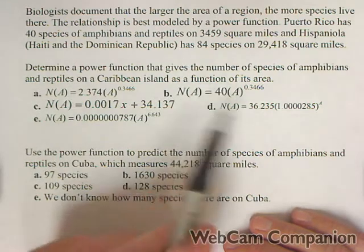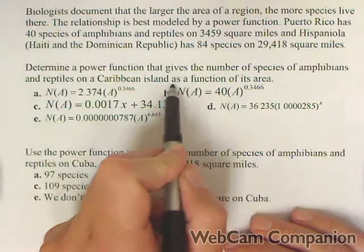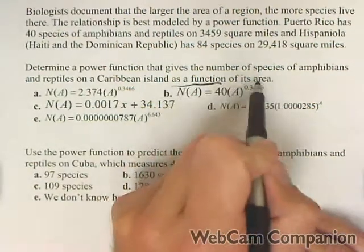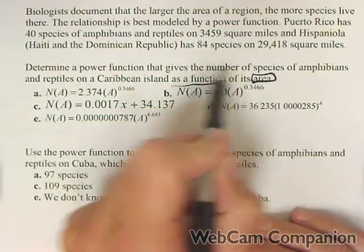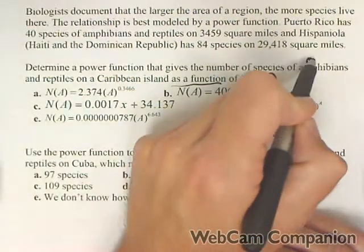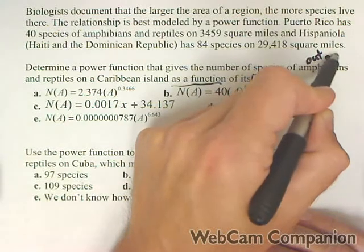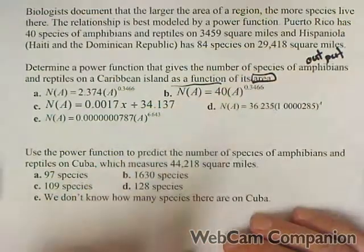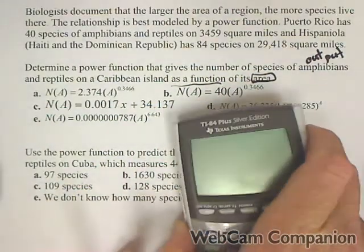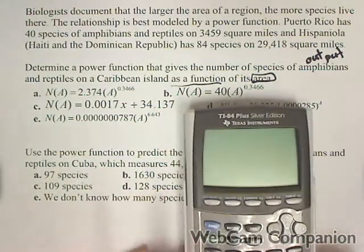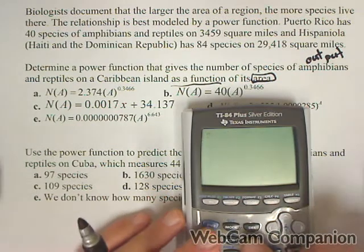The phrase 'as a function of its area' tells us that area is our input and amphibians is our output. We're going to look at this one with regression — a little bit of practice with regression.